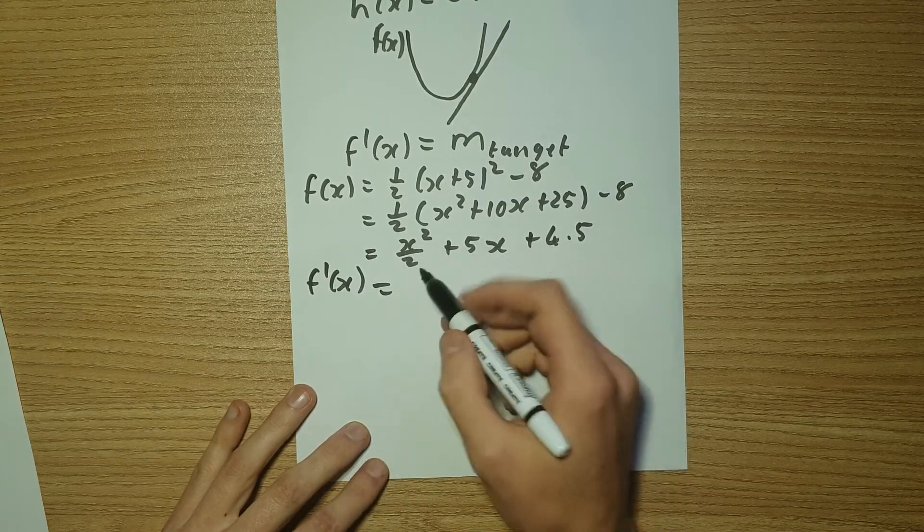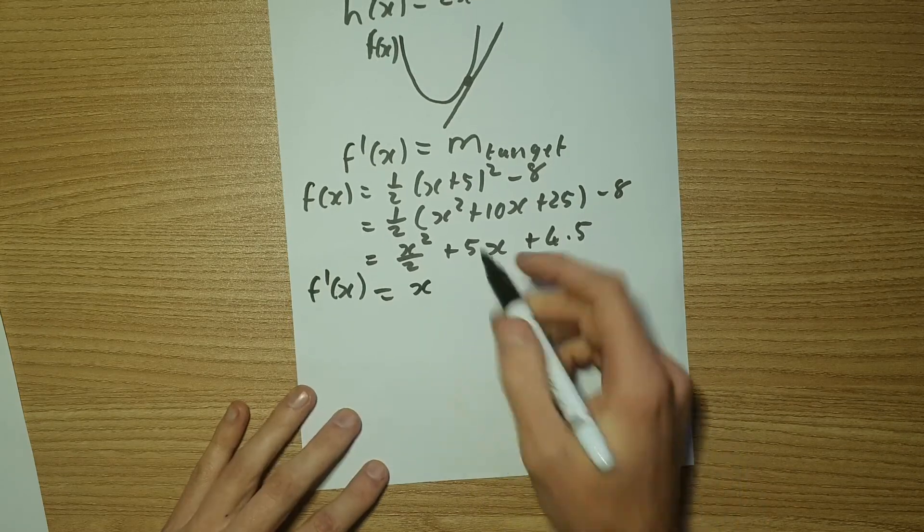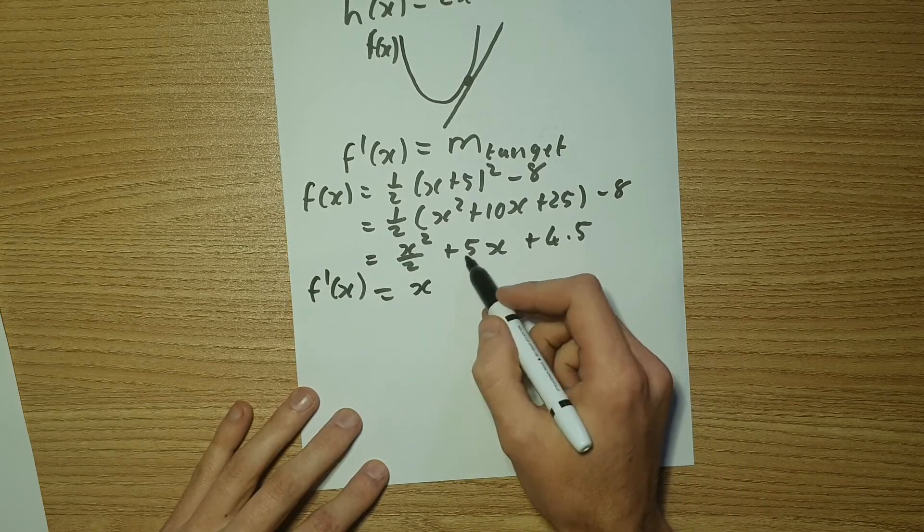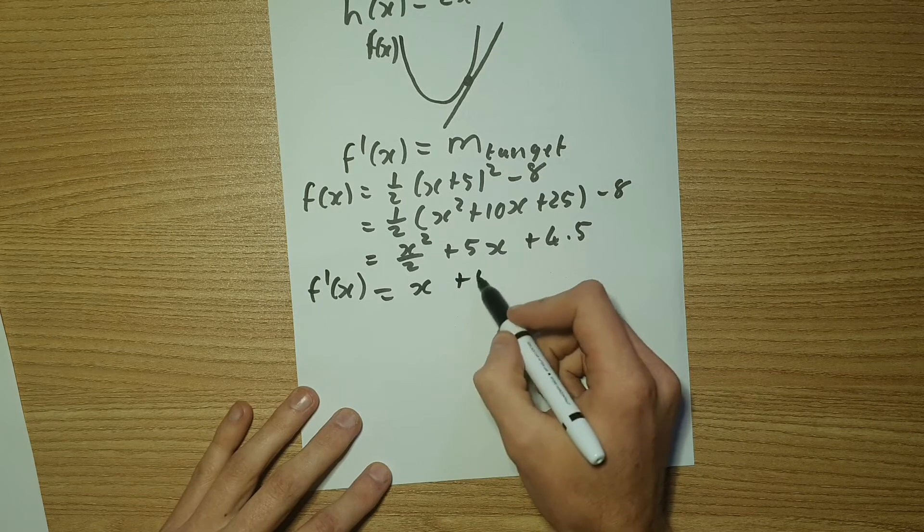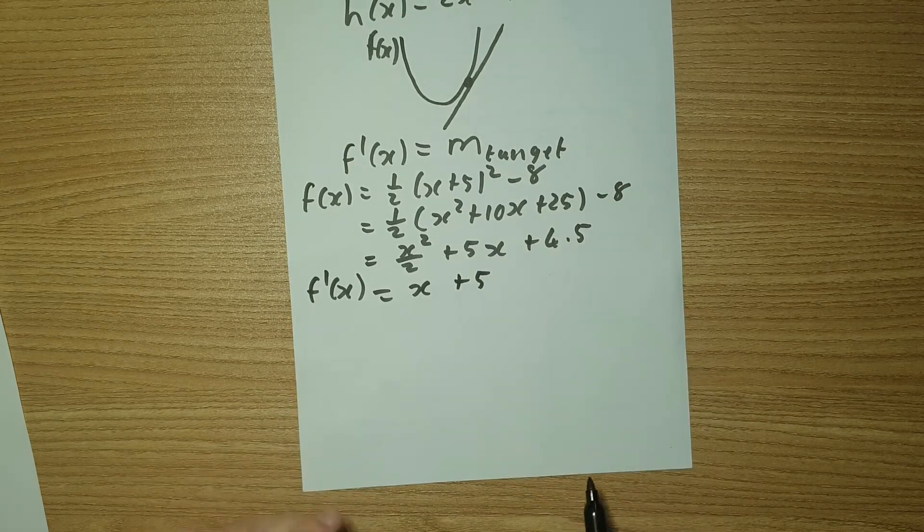Now that we have that, we can find F prime of X. That's going to be, remember, we take the two down. So two times, or two over two is one. So we're just going to have X. And then the derivative of five X is just going to be plus five.